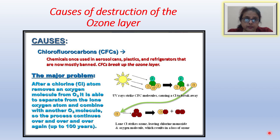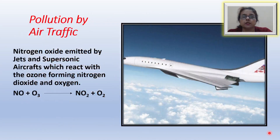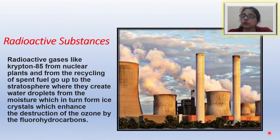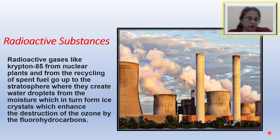There are several other factors also constantly destroying the ozone high up in the stratosphere. This includes pollution by air traffic: nitrogen oxide emitted by jets and supersonic aircraft reacts with ozone, forming nitrogen dioxide and oxygen, thereby destroying the ozone. Radioactive minerals are also responsible — radioactive gases like krypton-85 from nuclear plants and from recycling of spent fuel go up to the stratosphere, where they create water droplets from moisture which form ice crystals, enhancing the destruction of ozone by fluorohydrocarbons.